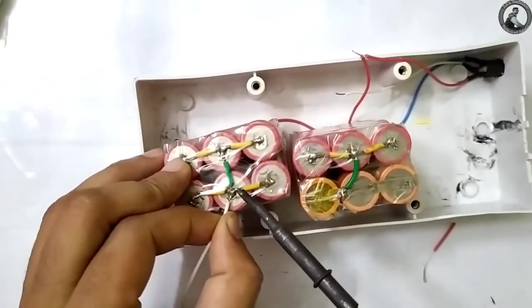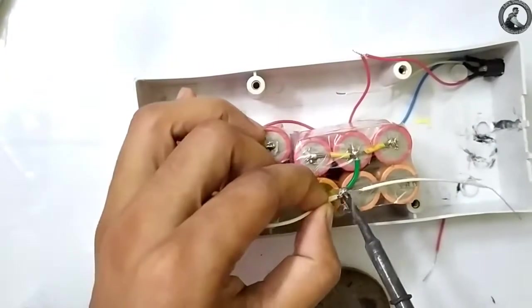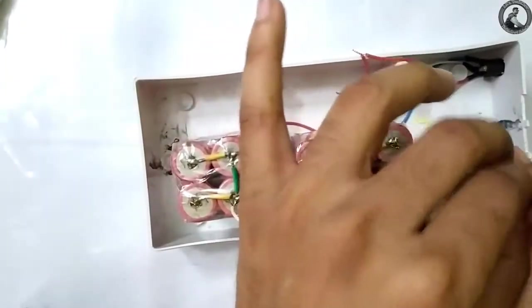In the same way, I am adding all the cells' negative terminals together with white wire, which will connect to the charger jack's negative and power bank circuit negative as well.